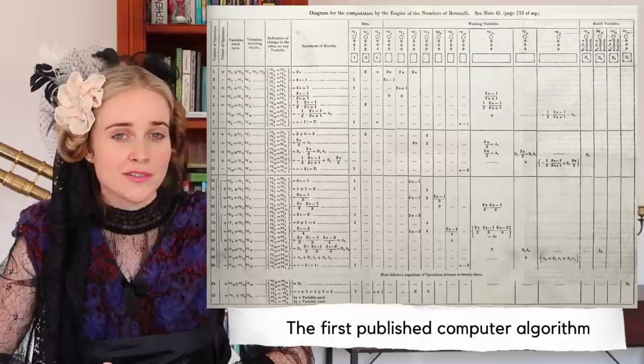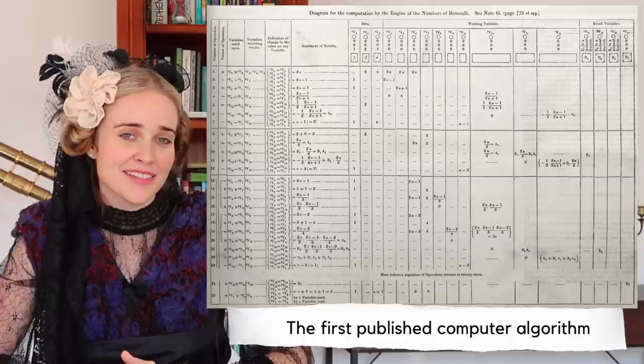It was in these notes that she included an algorithm that could use the engine to compute Bernoulli numbers, and it is this which is called the first computer program. She also notes that the engine could be used to do things other than arithmetic and computations — she has this idea that quantities other than numbers could be represented in the engine and could therefore go on to be used for things like composing music. This insight and vision, a hundred years before Alan Turing would come along with his own ideas of the modern computer, are really quite remarkable.